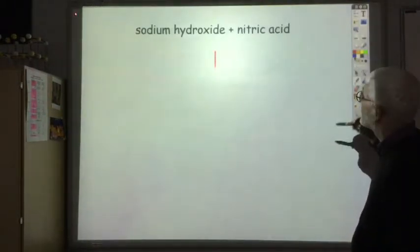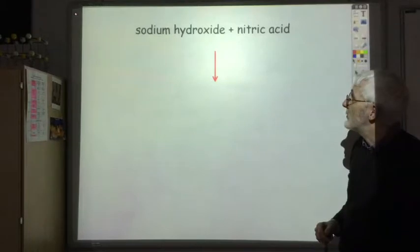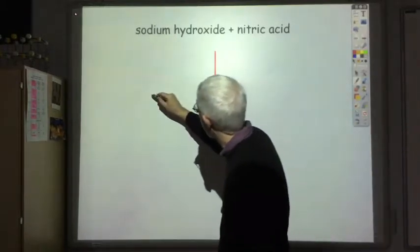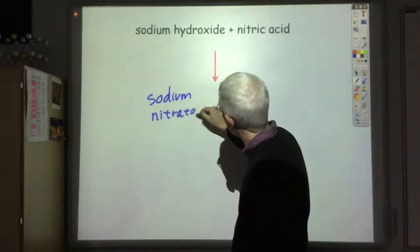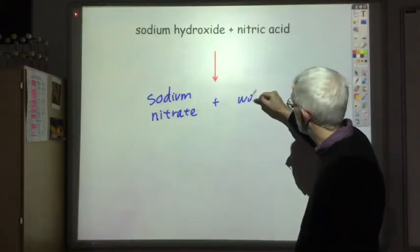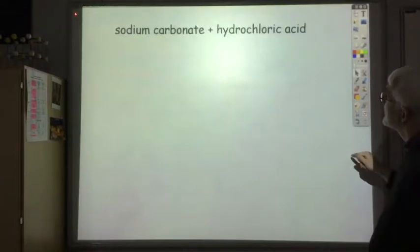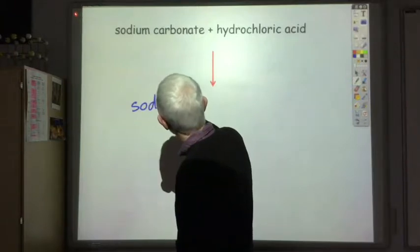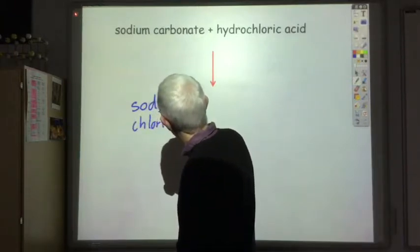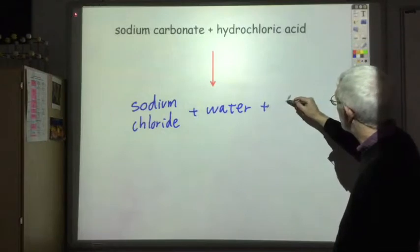Let's look at some examples. Neutralising nitric acid with sodium hydroxide produces sodium nitrate and water. Reacting sodium carbonate with hydrochloric acid gives sodium chloride, water, and — because it's a carbonate — carbon dioxide.